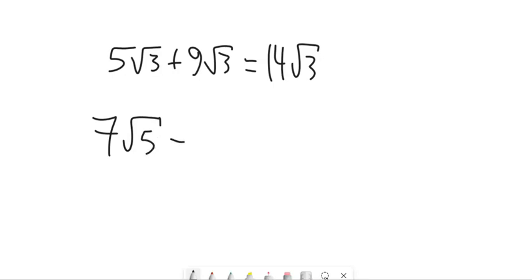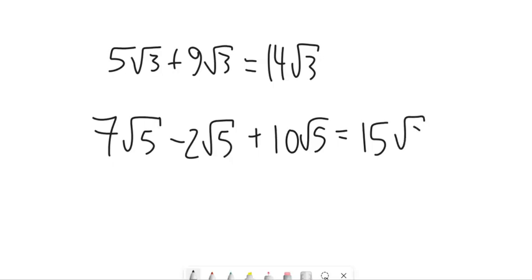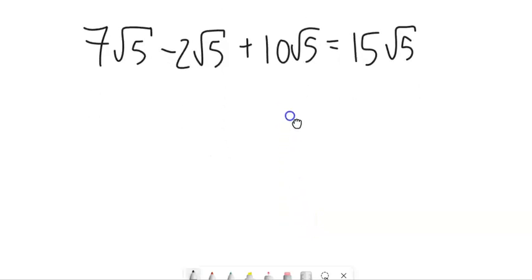Or if I had something like 7√5 minus 2√5. 7 minus 2 is 5. That gives me 5√5. And I can keep doing this. Like let's say that on this problem there was another piece too that was plus 10√5. Now we can add them all together. Now it's 5 plus 10 of them, now it's 15 of them. So we can string together as much as we want.